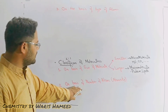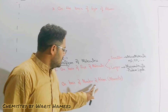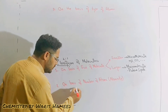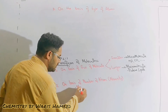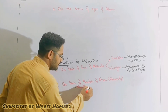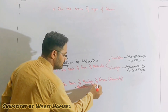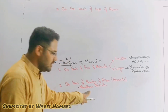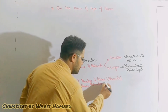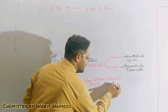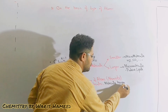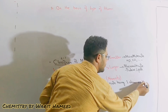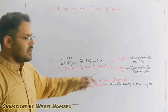Moving to the next classification — on the basis of number of atoms: molecules having one atom are known as monoatomic molecules. In this type of molecule, the molecule has just one atom. For example, helium. All noble gases are monoatomic molecules.